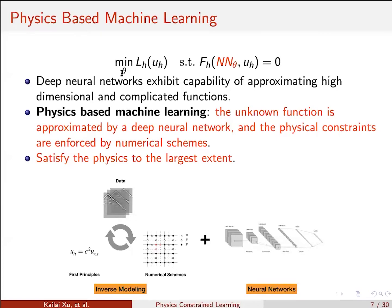The model parameter here is the weights and biases of the neural network. The advantage of this method is that it satisfies the physics to the largest extent, because you are using a numerical solver to enforce your physical constraints. The reason for using a neural network is the claim in many research works that neural networks generally exhibit capability of approximating high-dimensional and complicated functions.